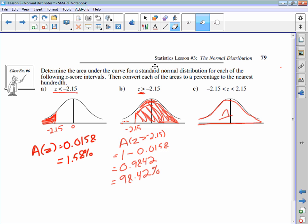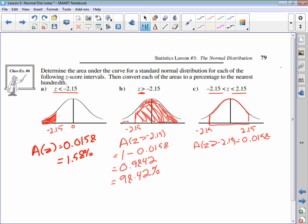I'll just erase what I did here. Because now we're looking for the area greater than negative 2.15 and less than positive 2.15. To do this area in here, this is what we want. We have to figure out two areas. We know the area of z is less than negative 2.15, which is 0.0158. We've already looked that up.